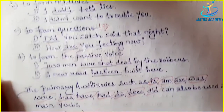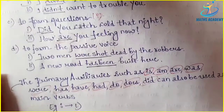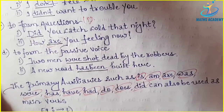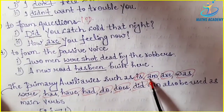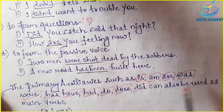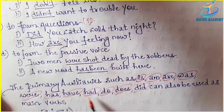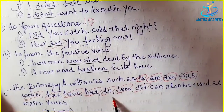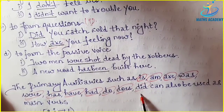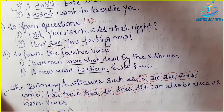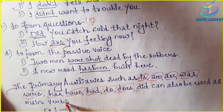Now, the primary auxiliaries such as is, am, are, was, were, has, have, had, do, does, did can also be used as main verbs.